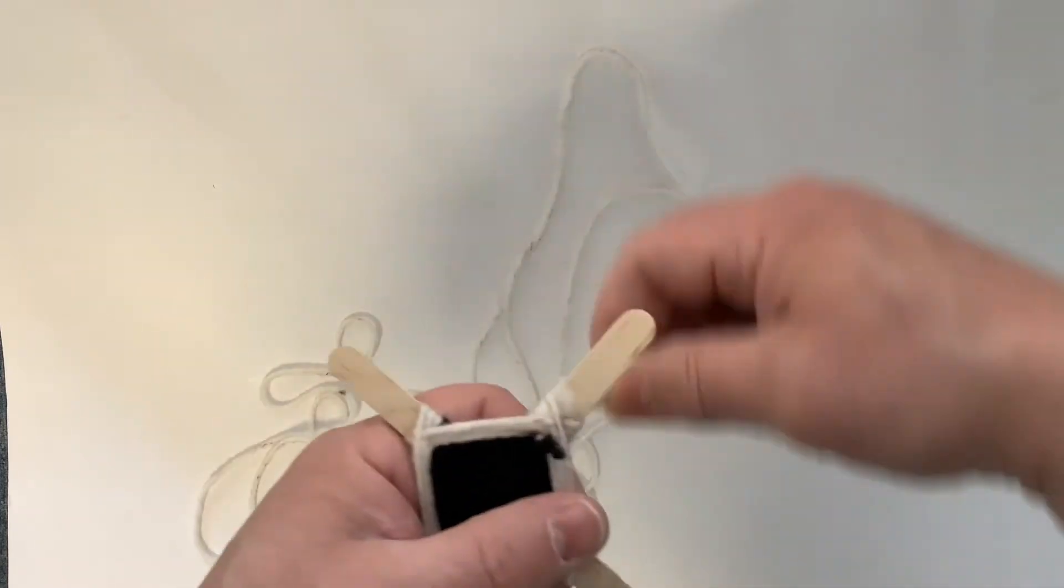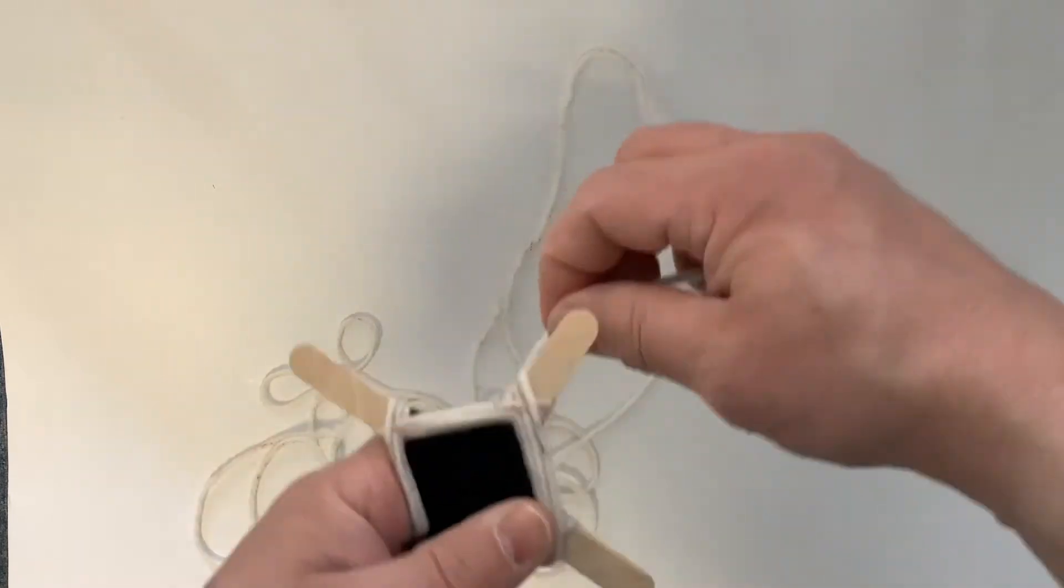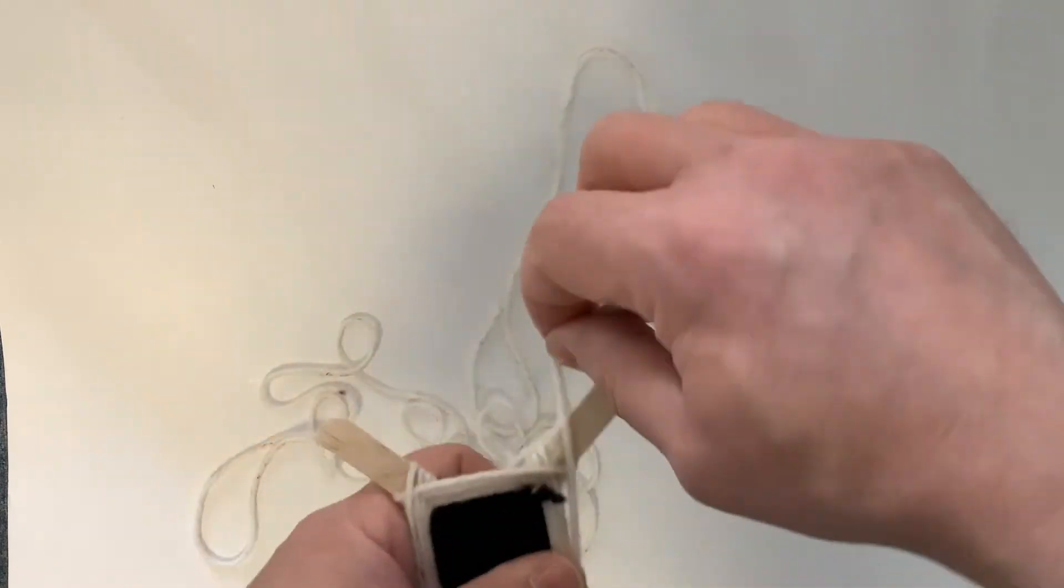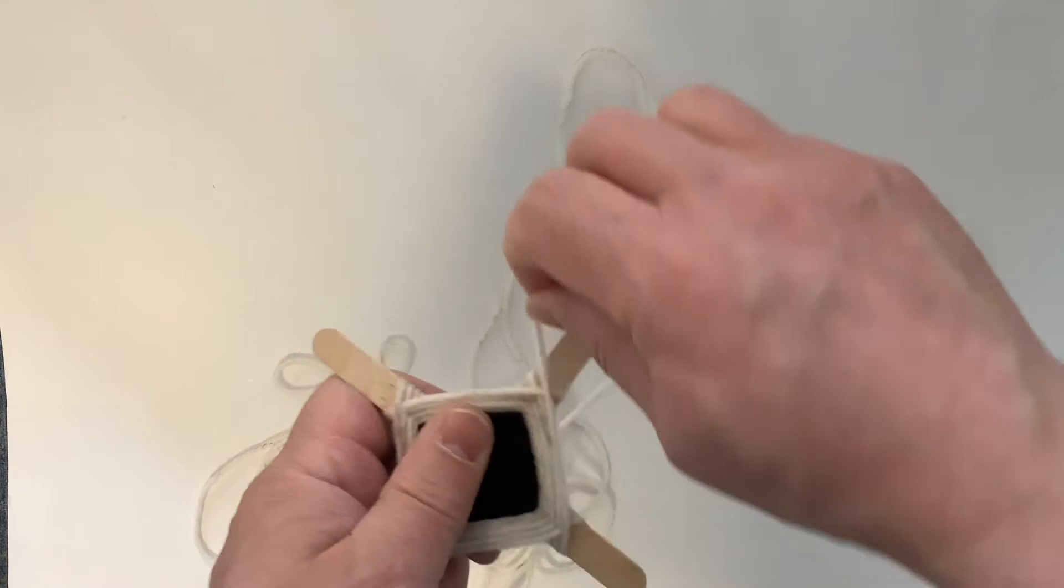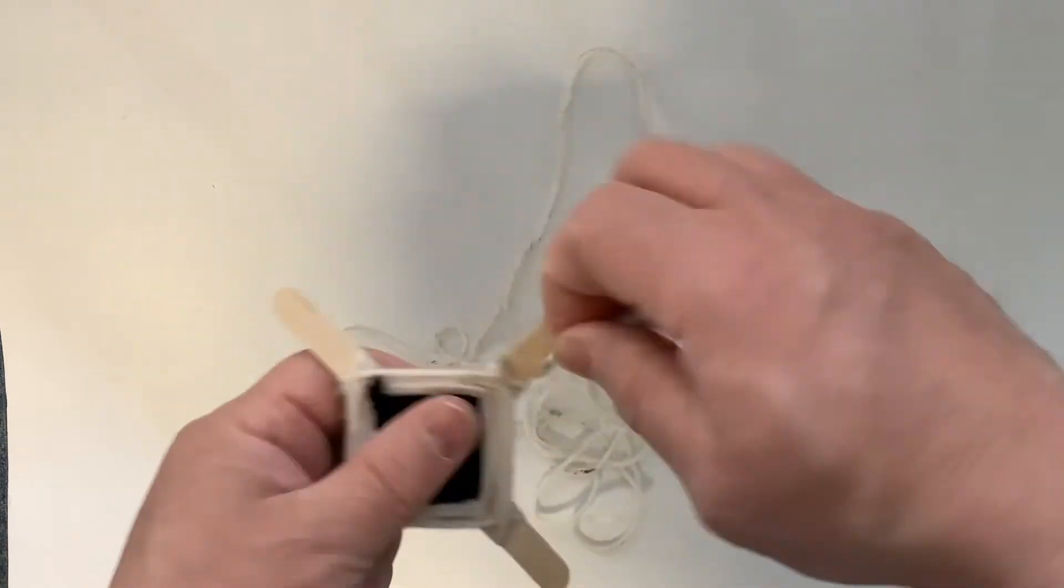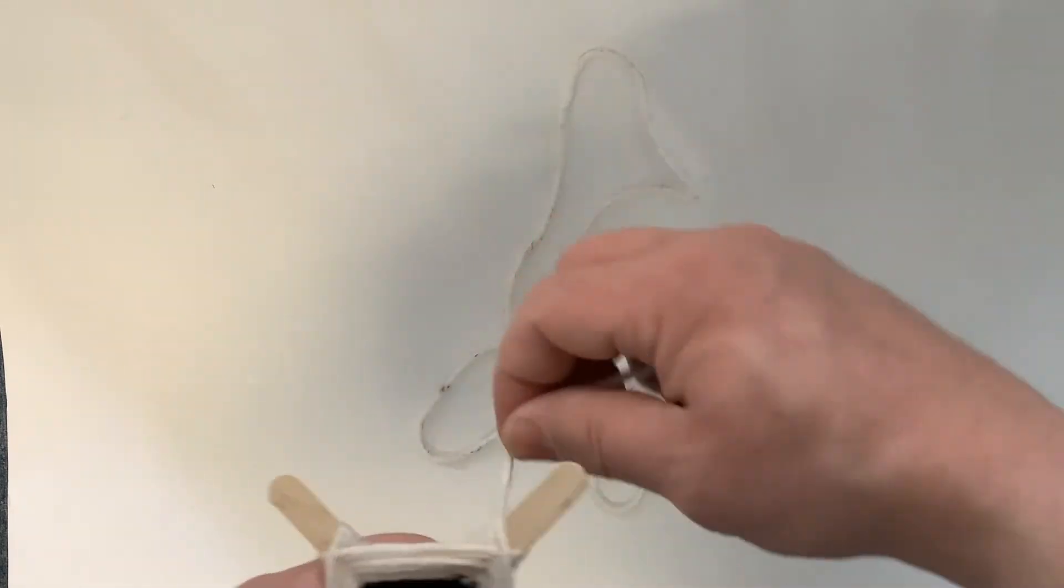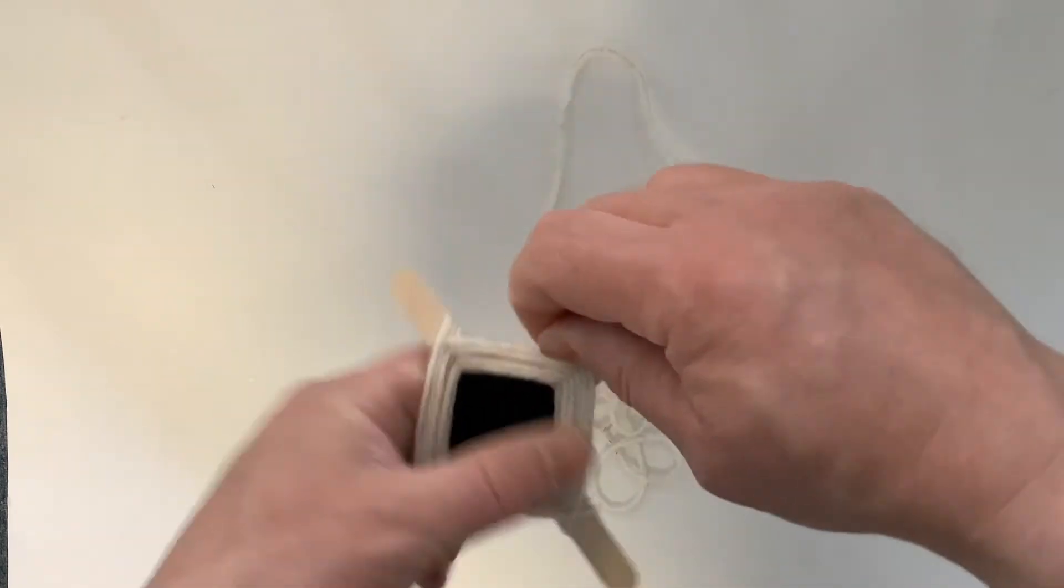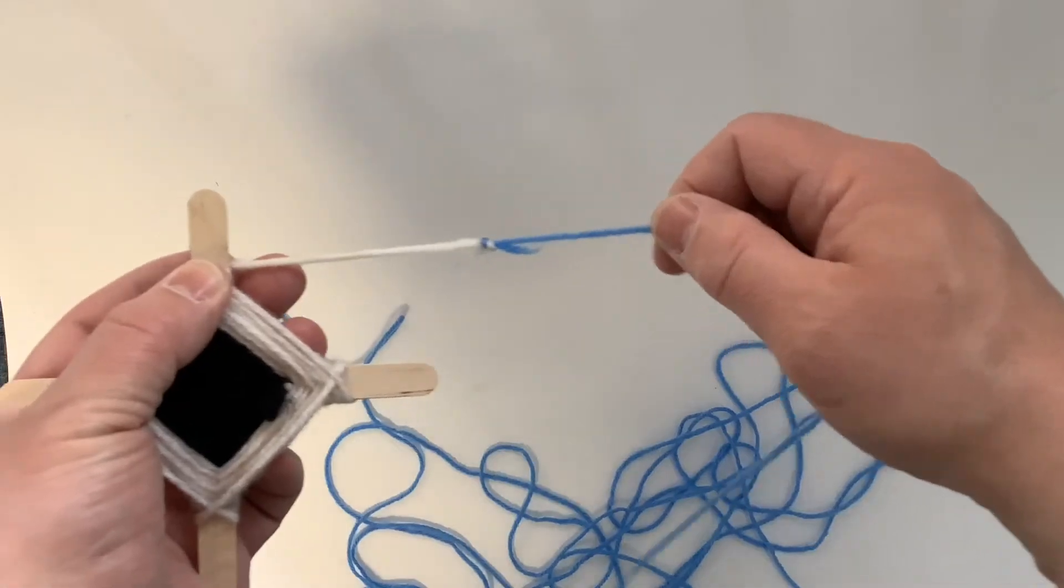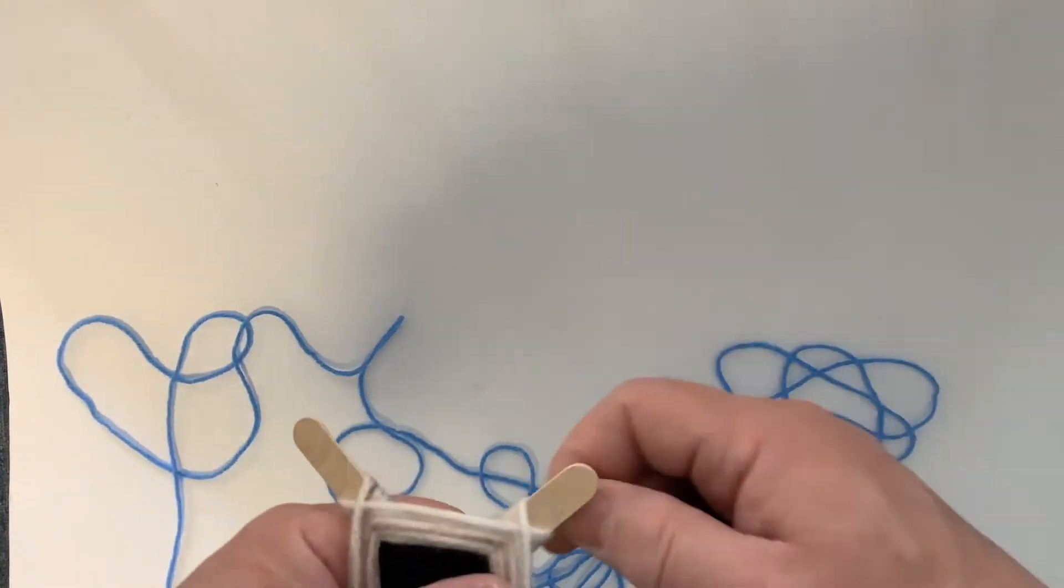You're just making those loops around each arm. And when you decide that you have had enough of that color, you can cut it and add a third color of yarn. And there I've added a blue.